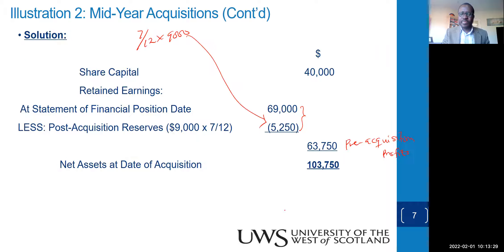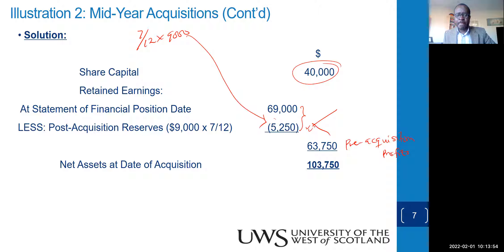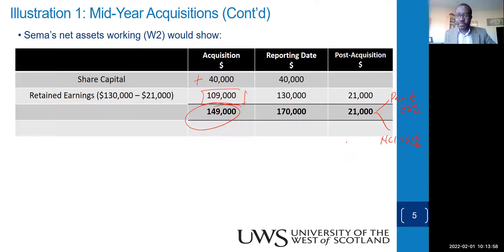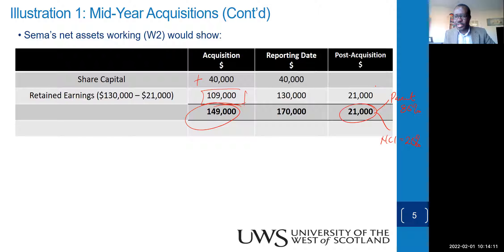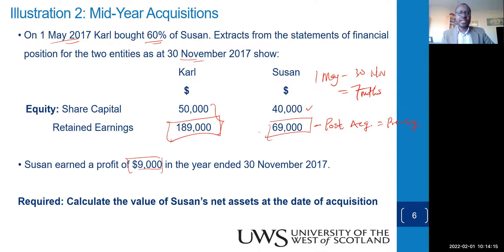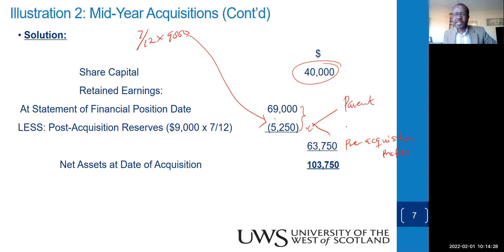You can present this in tabular form or as a logical calculation — either method is acceptable and will be marked correct. Subtract the post-acquisition figure from the year-end retained earnings to get pre-acquisition profits, then add back share capital to get net identifiable assets. The post-acquisition of 5,250 is split between parent and NCI — consistent whether shown horizontally or in a table.